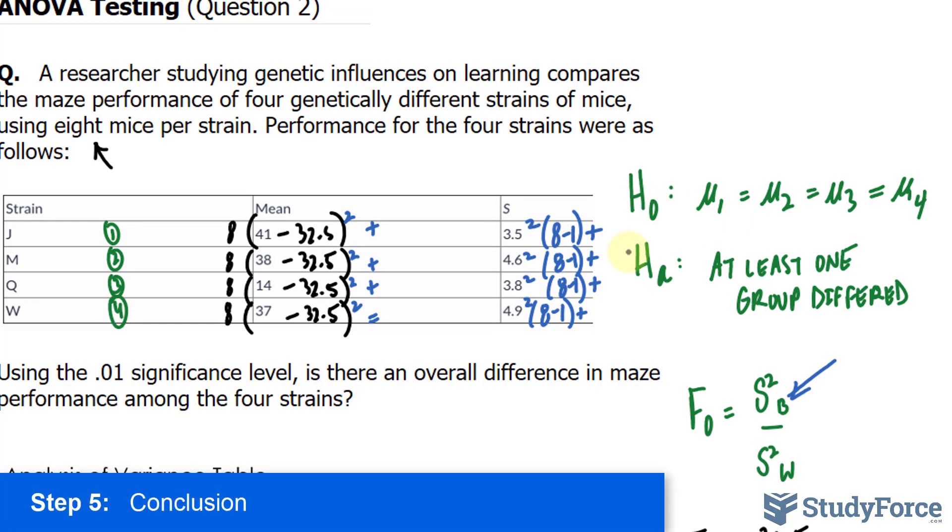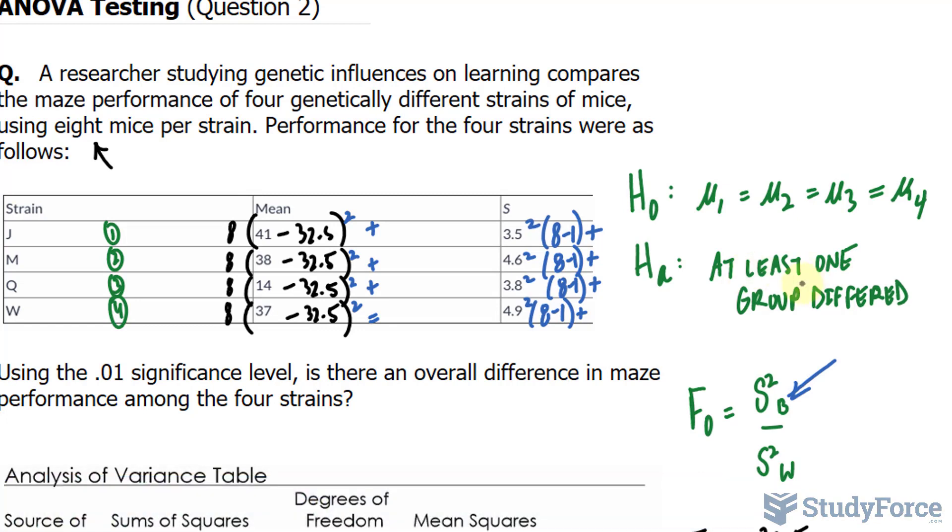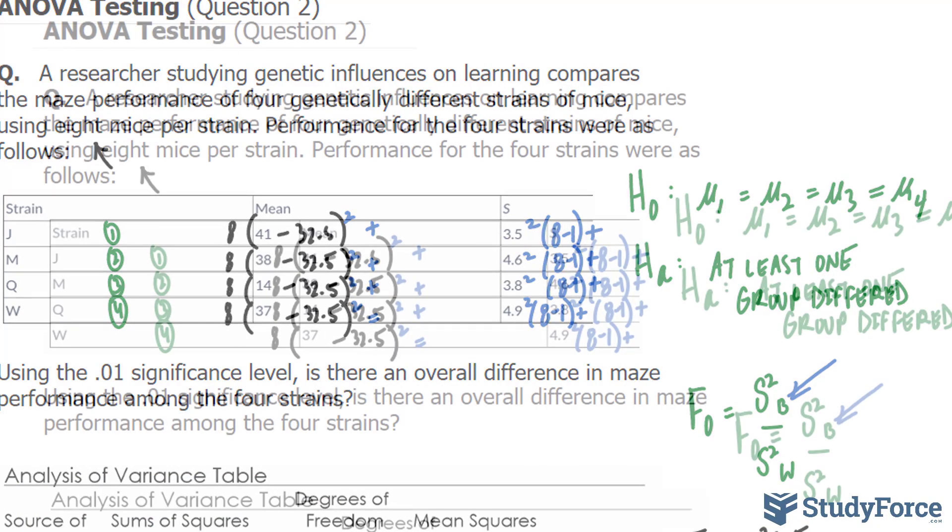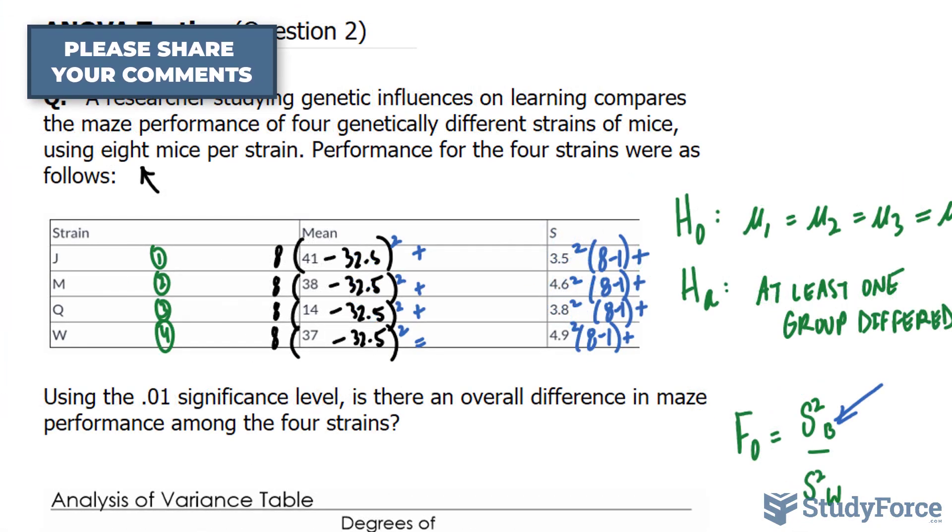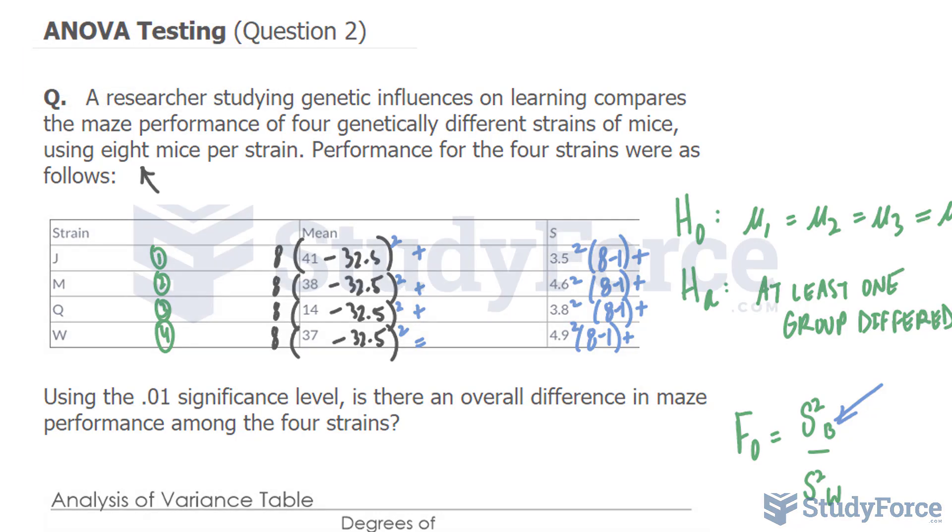The final step is to conclude. We have sufficient evidence to say that at least one of these groups differed at 0.01 significance. And there you have it. That is how to perform the ANOVA test when you're given only the mean and standard deviation.